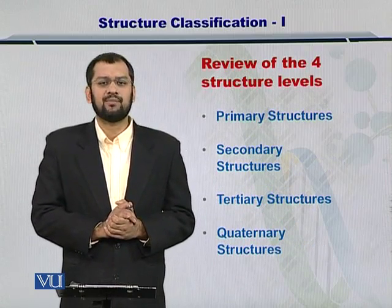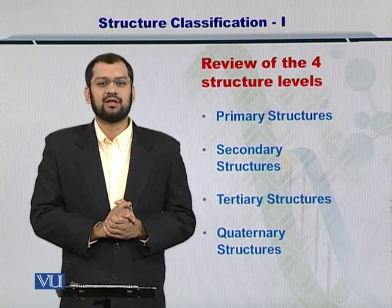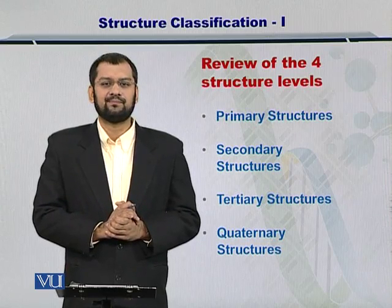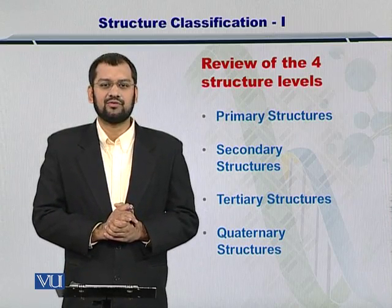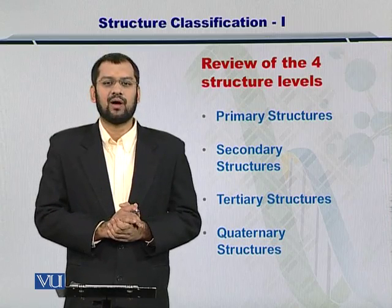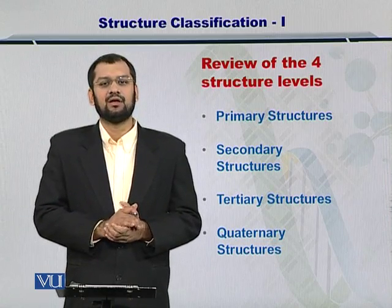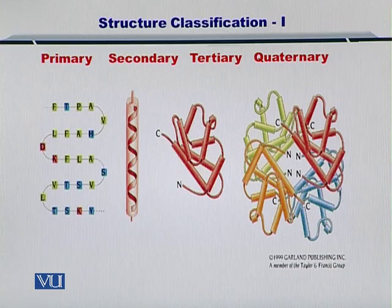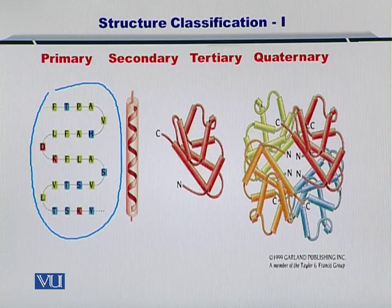Let me review the four different types of structures that exist for every protein. Firstly, we have the primary structure, then we have the secondary structure, followed by the formation of tertiary and then the quaternary structure. Here in this figure, I am going to show you the four different types of structure with the help of an illustration. The primary structure, as you already know, is simply the set of amino acids that have been polymerized in the form of a chain.